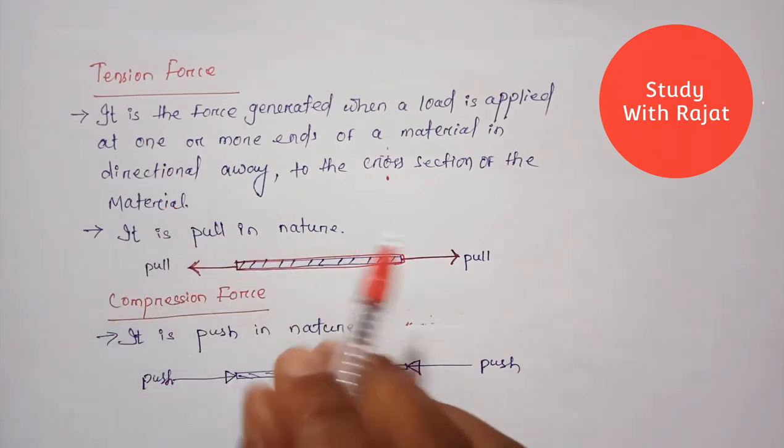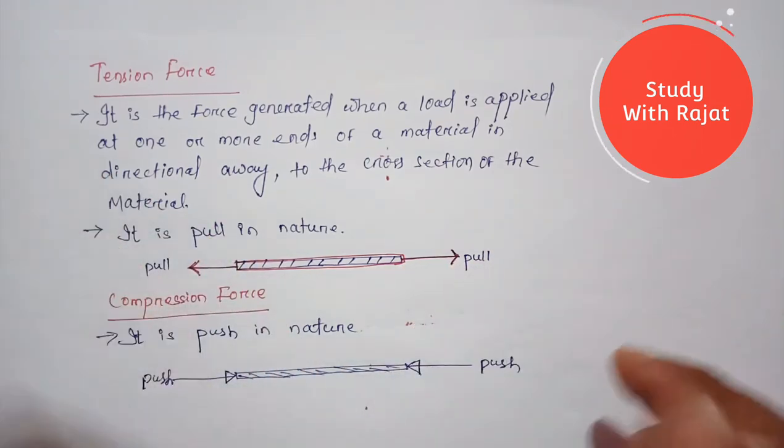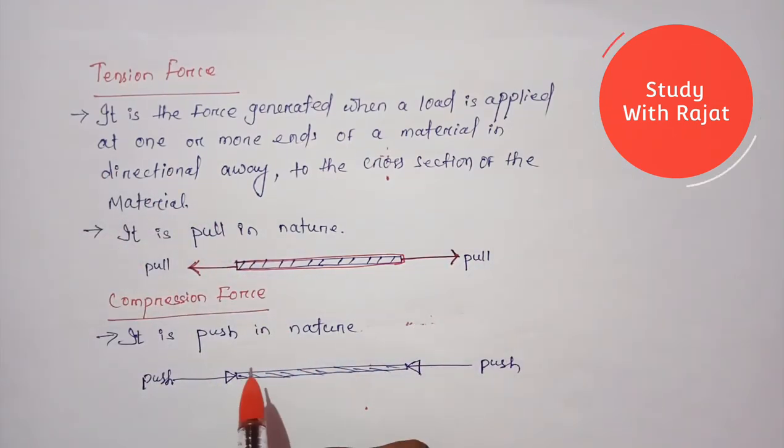If I take an example, a rubber is there. If you pull that rubber like that then it will be stretched. Compressed force means a force where we will be compressing the body. Means its size will be decreased.